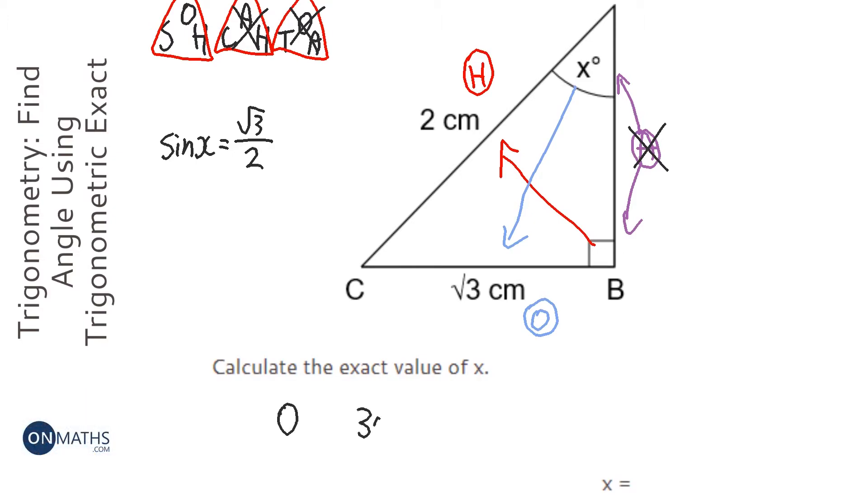What you do is you write down the values 0, 30, 45, 60, and 90. And with sine, if you circle one of them and you put the numbers on the left of the one you've circled over 2, then that's the sine value. So nice and easy.